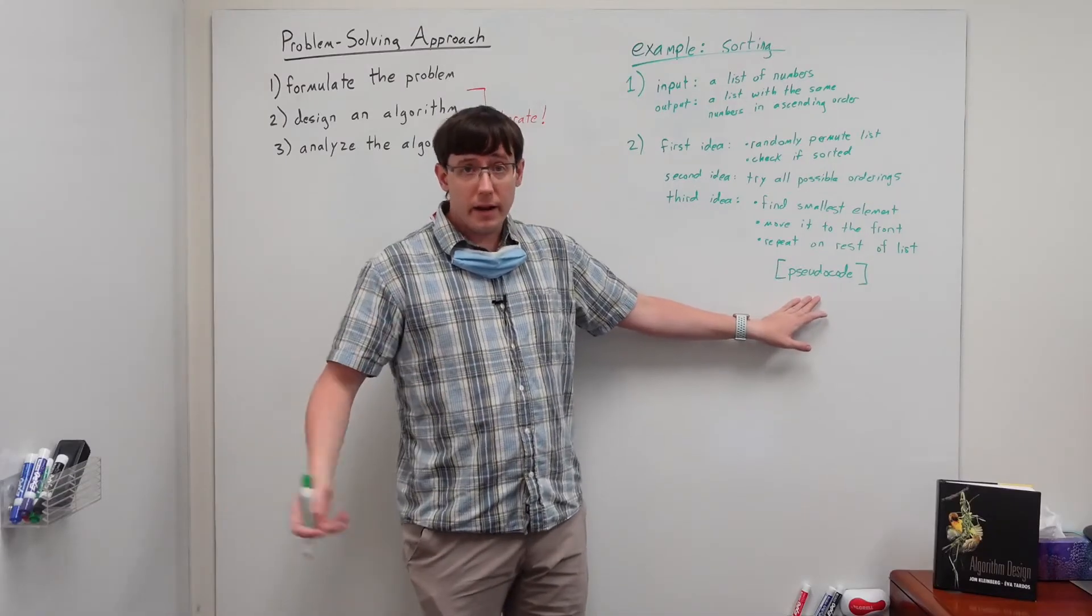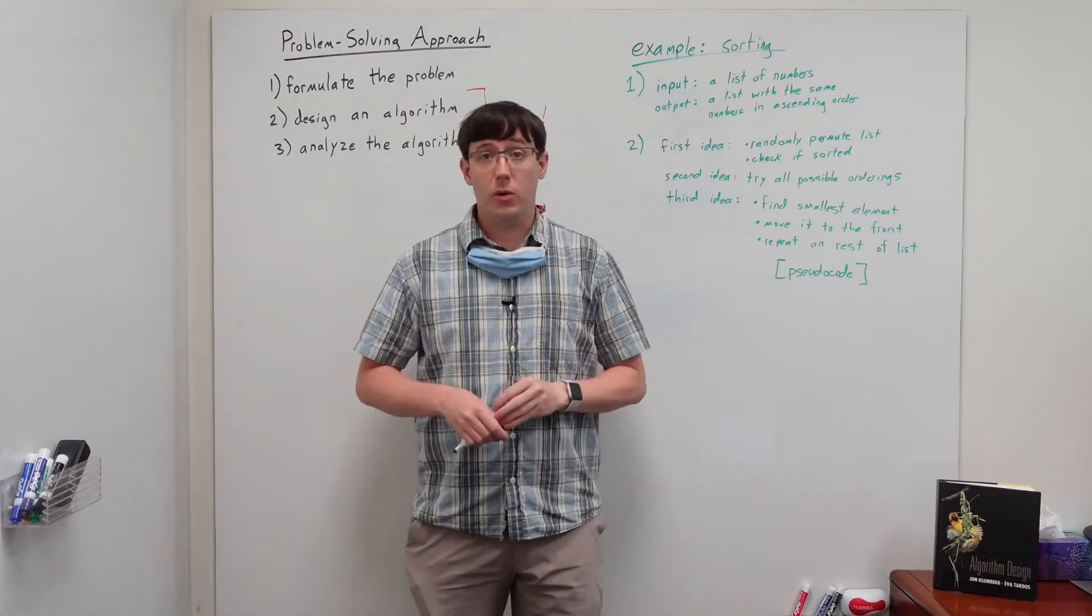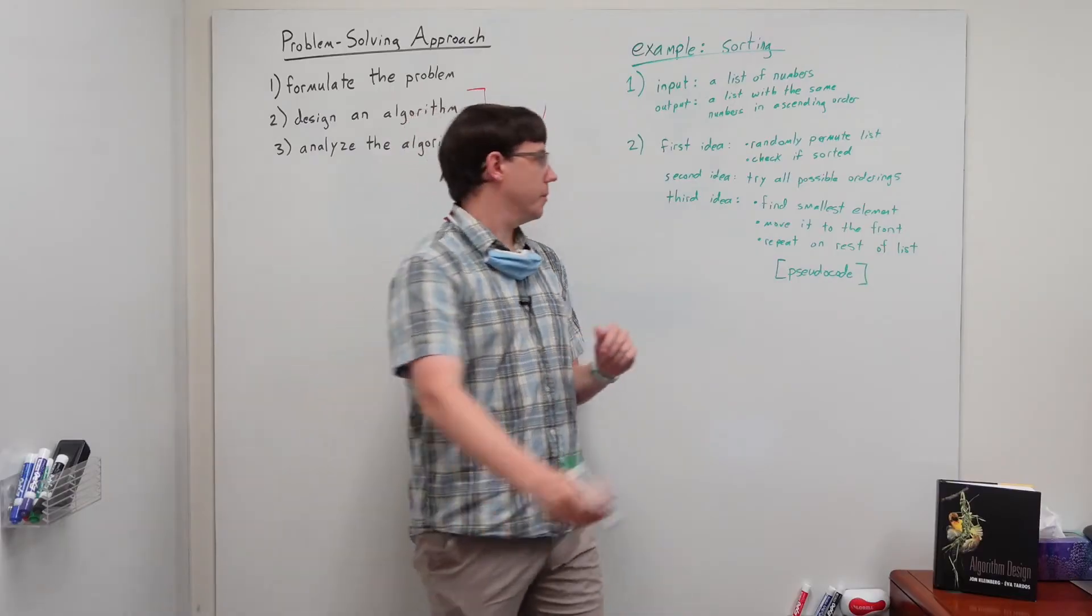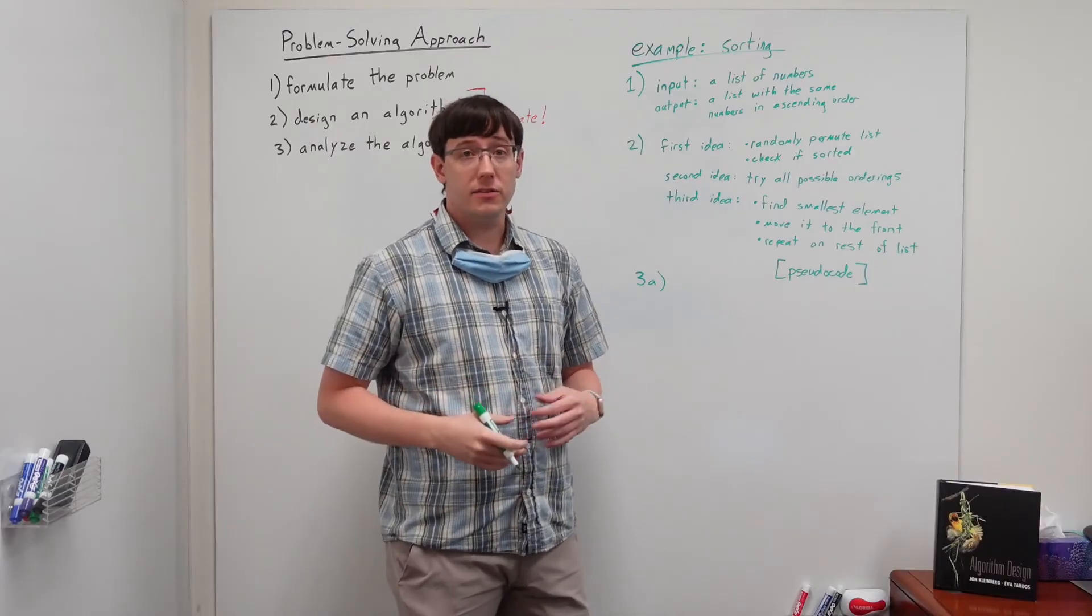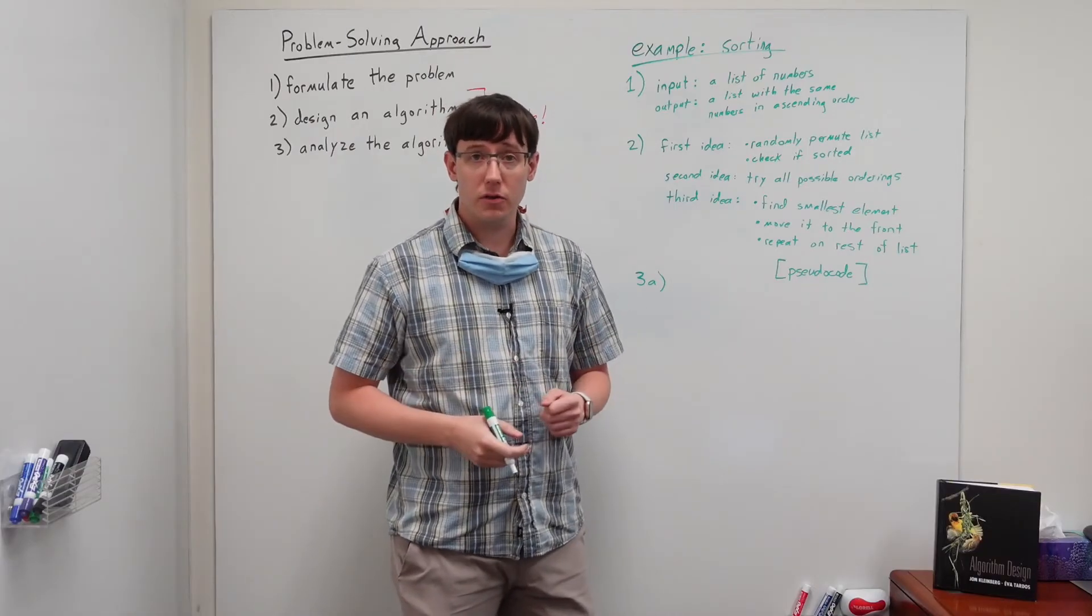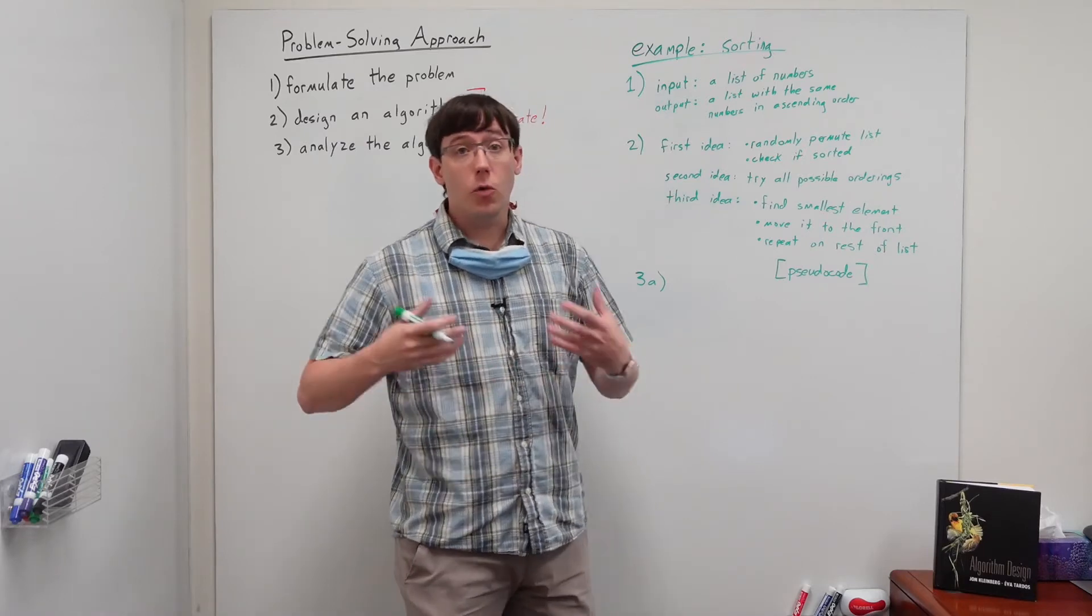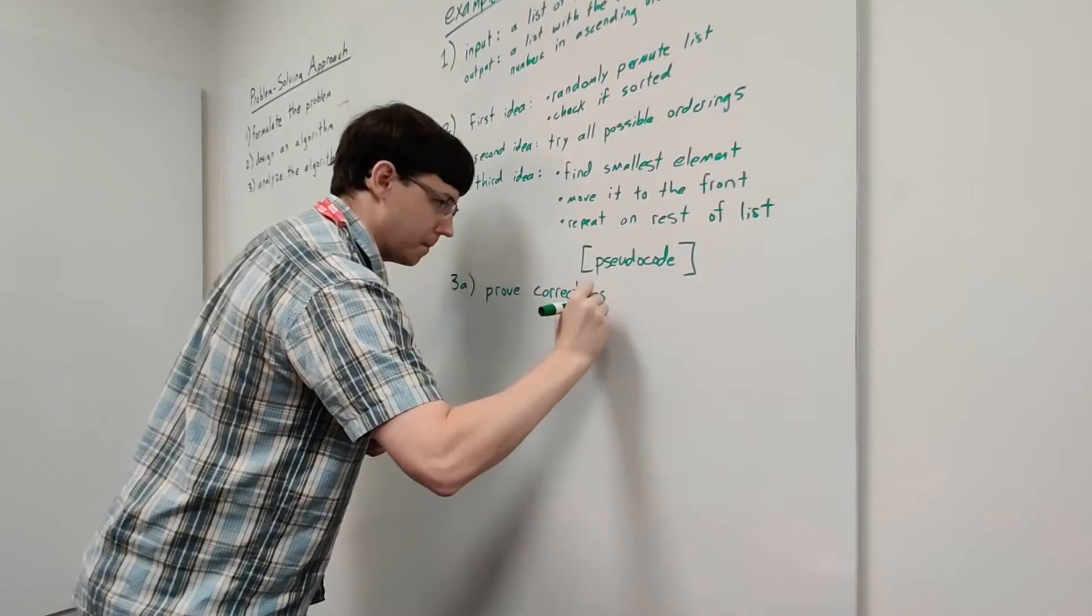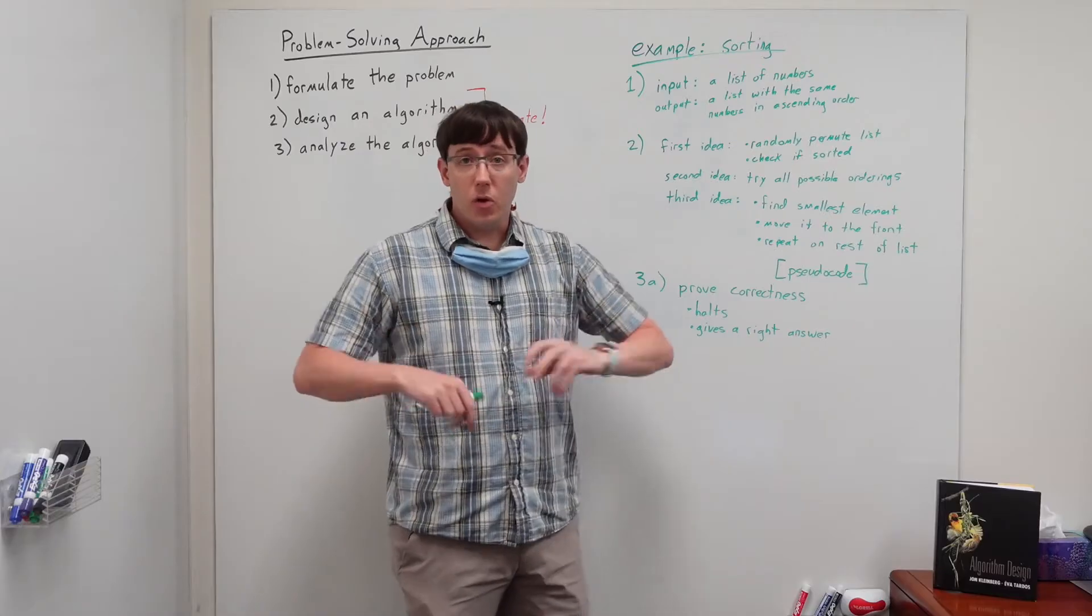Once we've written an algorithm, then step three is to actually work on a formal analysis of that algorithm. And as we said before, that analysis consists of two parts. First, a proof of the correctness of the algorithm.